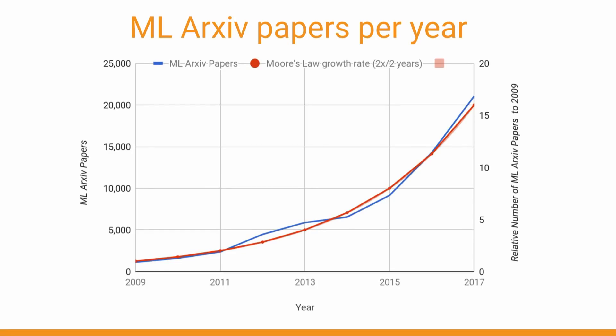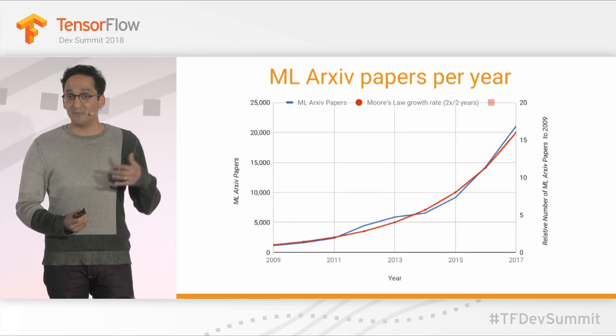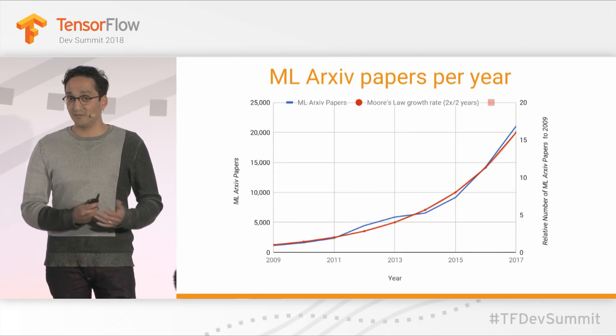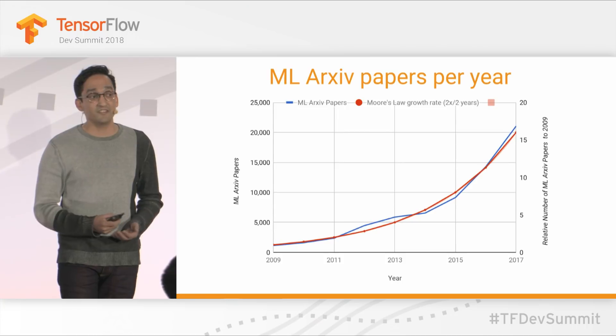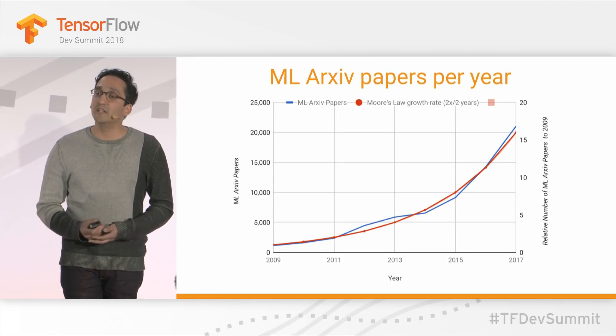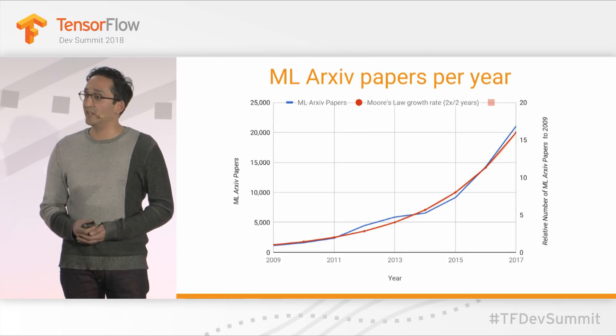This graph tries to put this into perspective by measuring how many machine learning papers are published on arXiv every year since 2009, and plotting that against a Moore's Law exponential growth curve. As you can see, we've been keeping up with Moore's Law — 2x every two years — very well. This demonstrates just how many new ideas are being developed in the field.